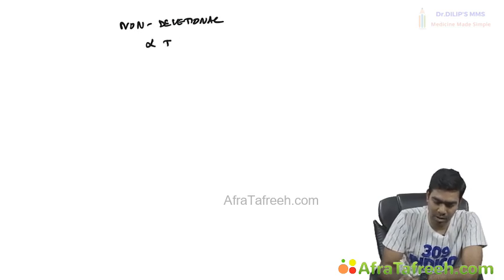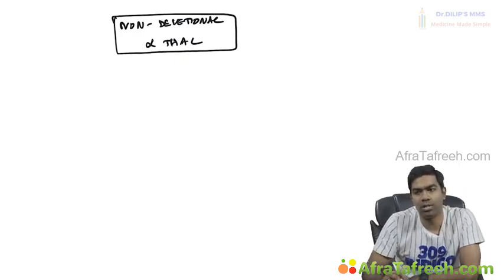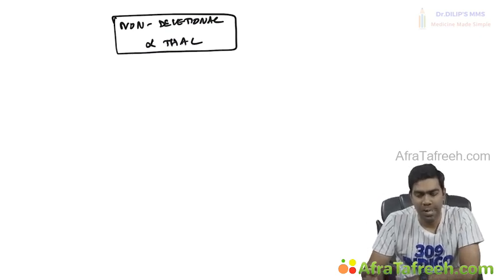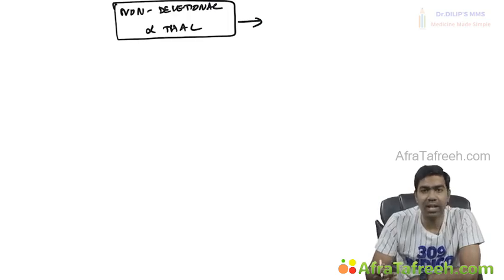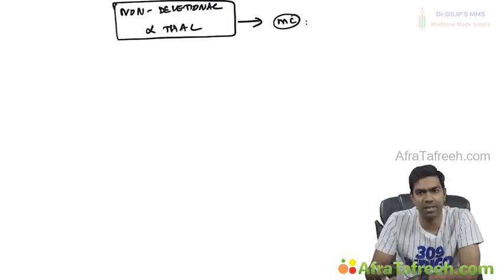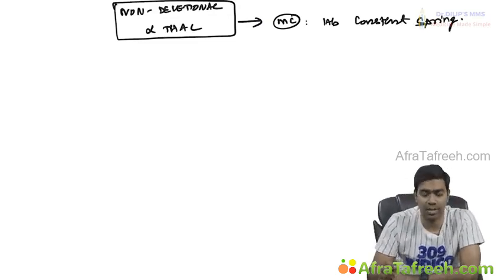The final category is non-deletional alpha thalassemia. This is where the problem is something other than gene deletions. The most common and classic example is Hemoglobin Constant Spring, which was first identified in the Caribbean region called Constant Spring — hence the name from the geographical area where it was first discovered.